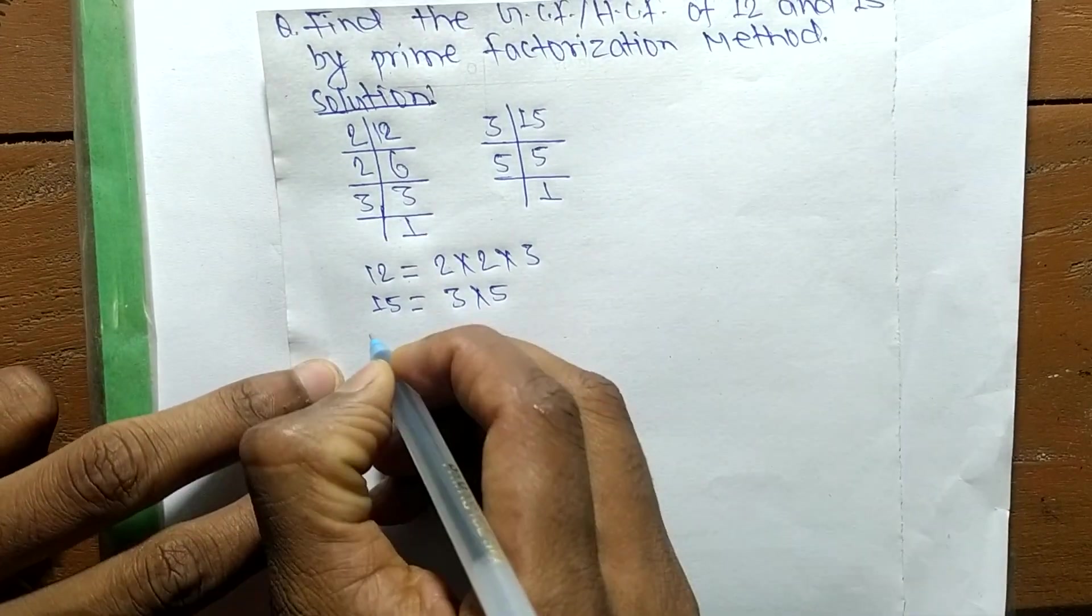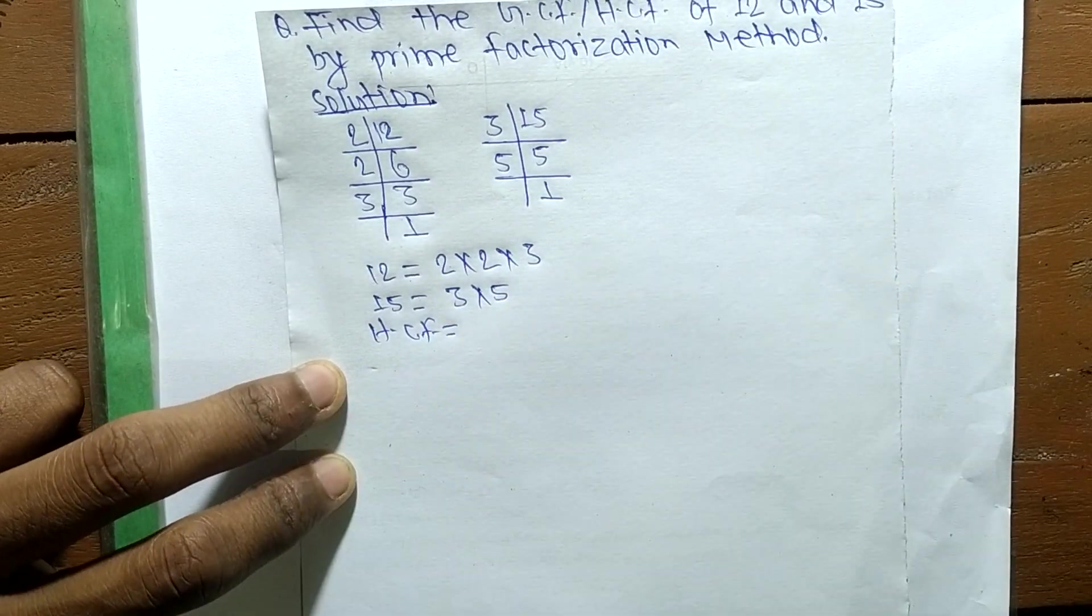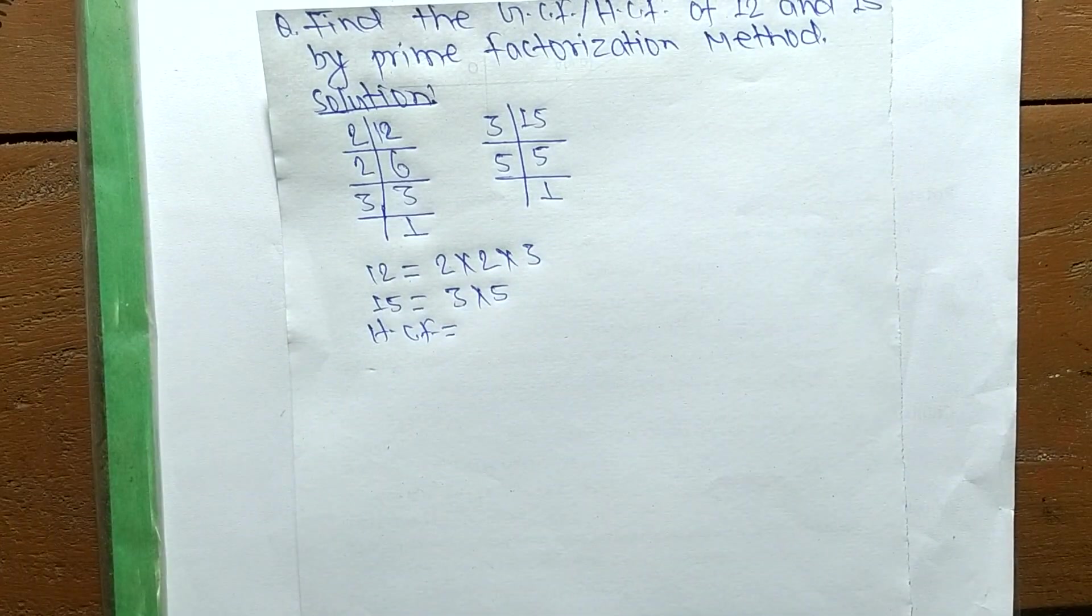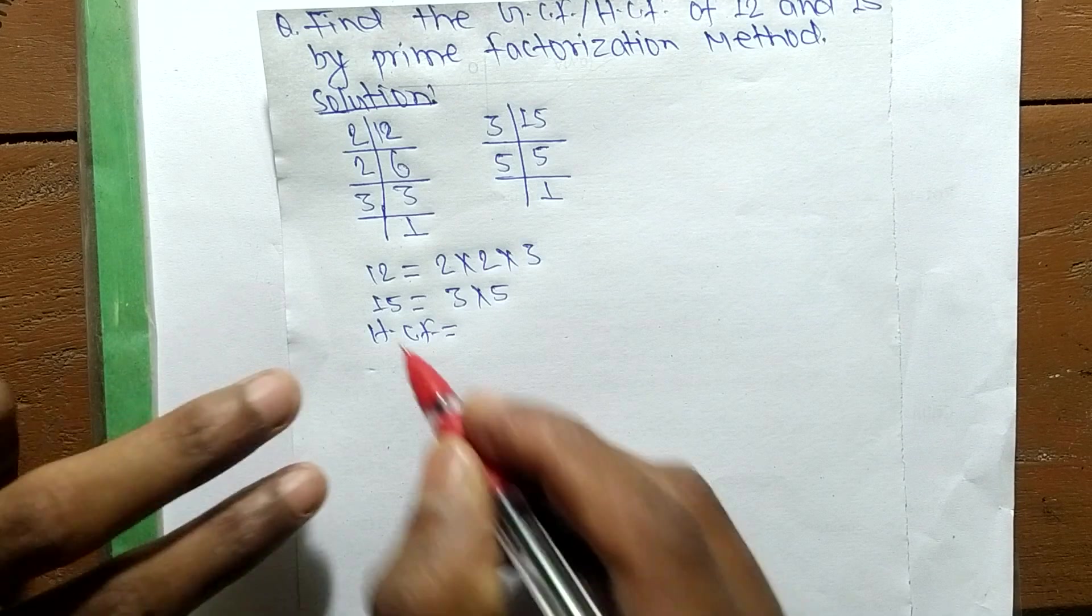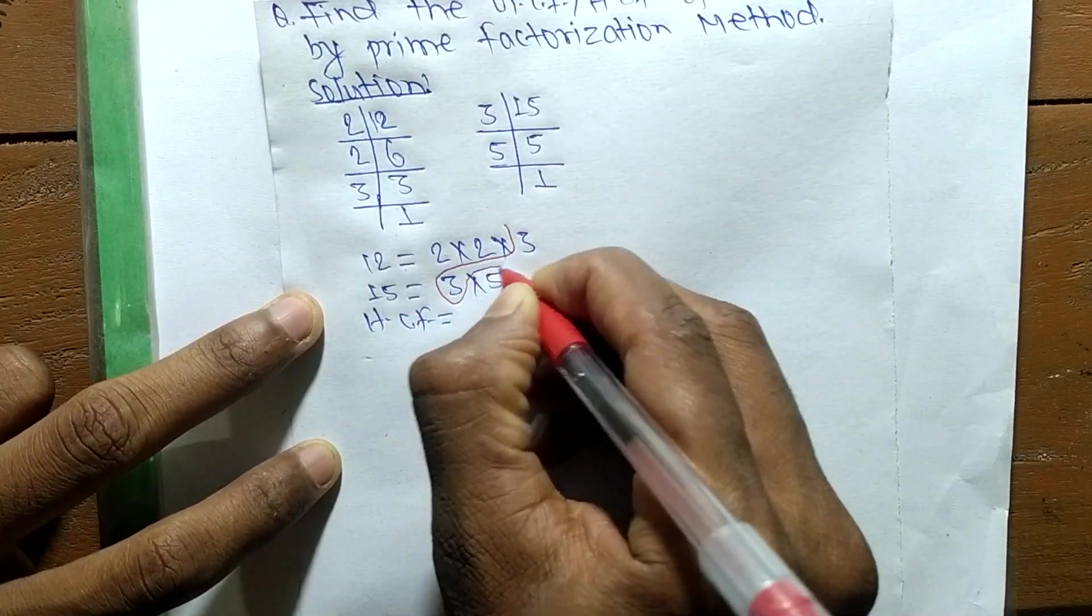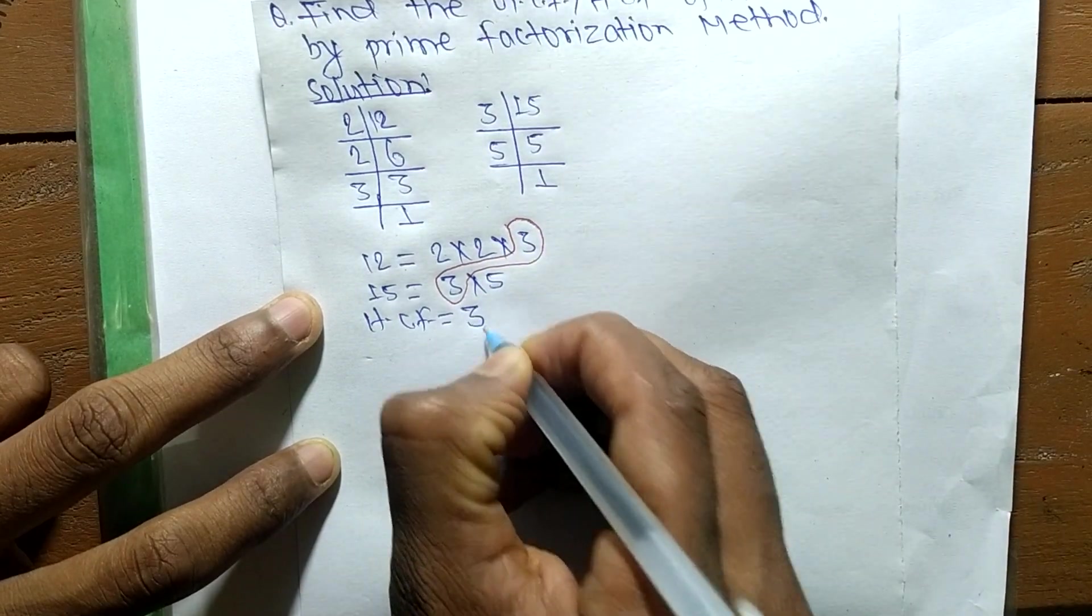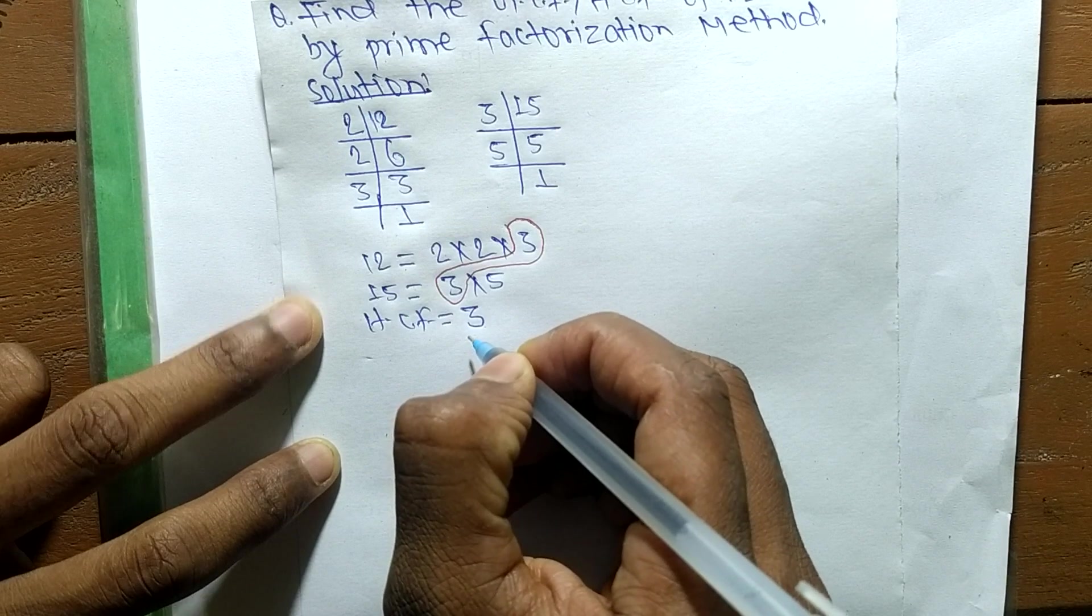So its HCF is equal to—now we have to find out common factors in the prime factors of 12 and 15. So the common factor here is 3, so its HCF is equal to 3.